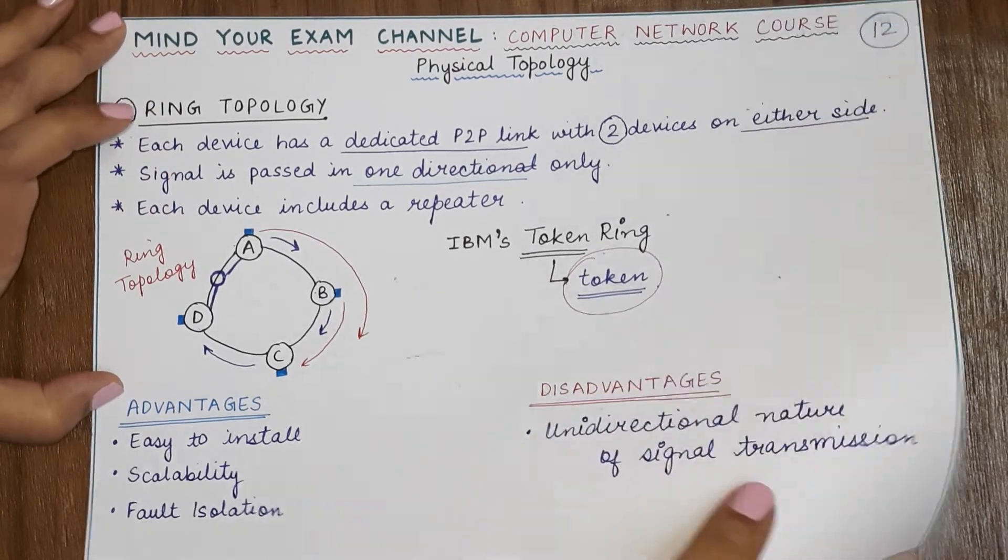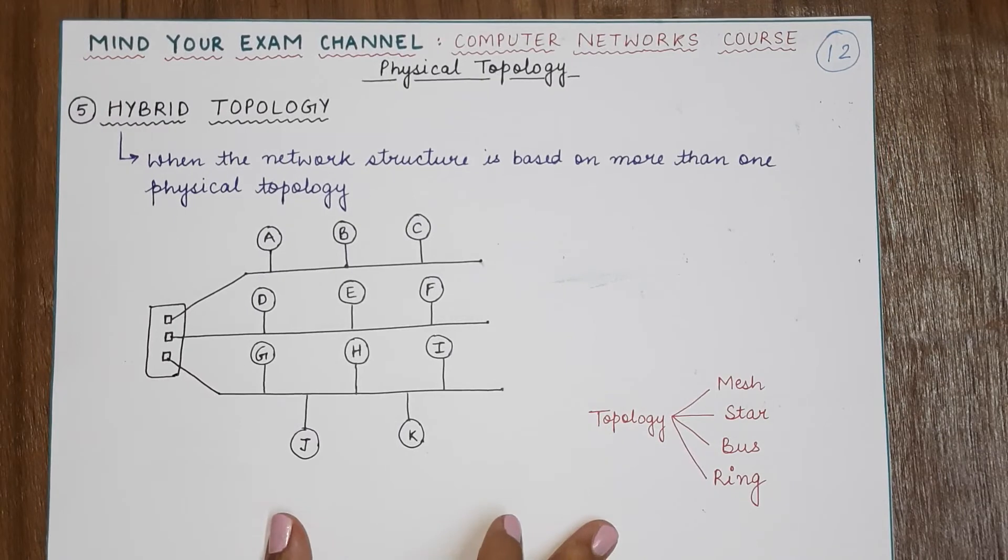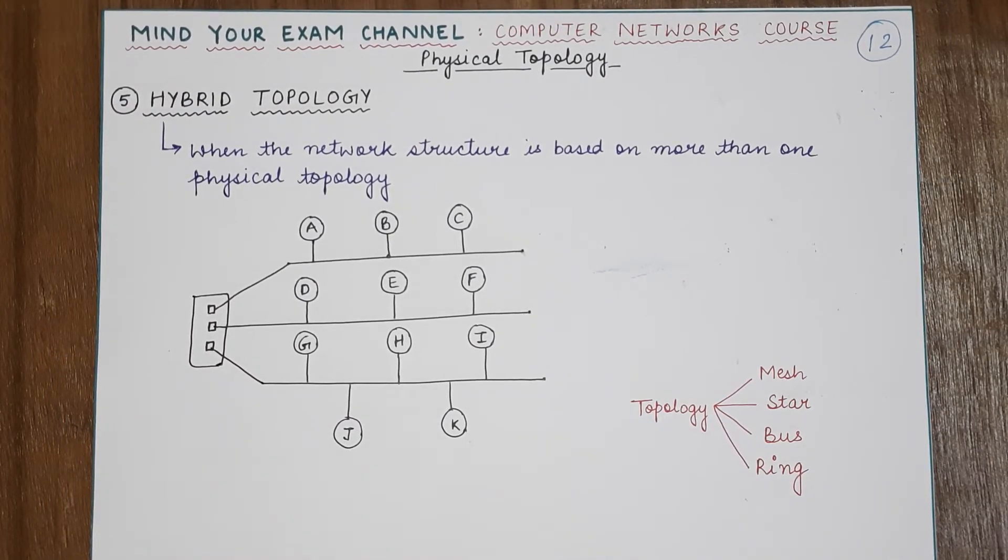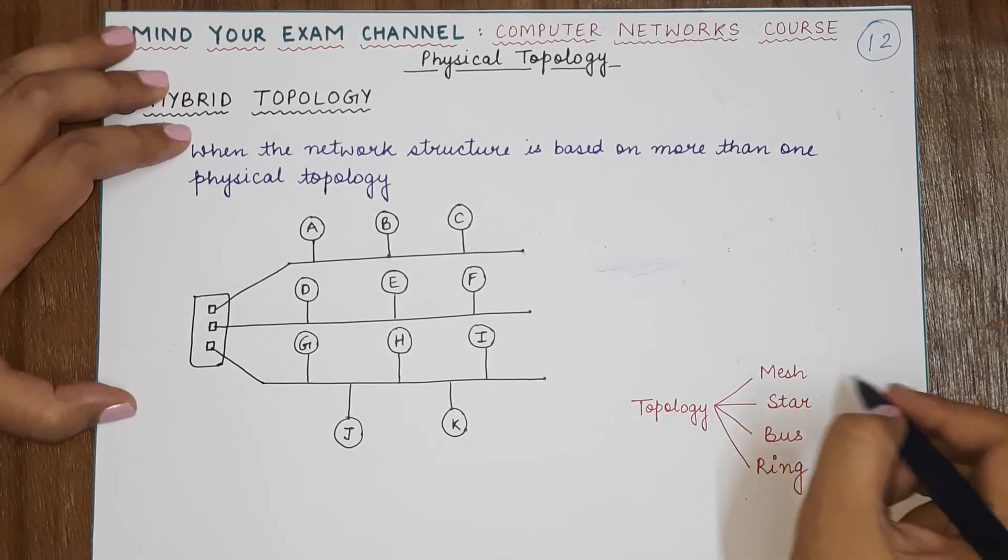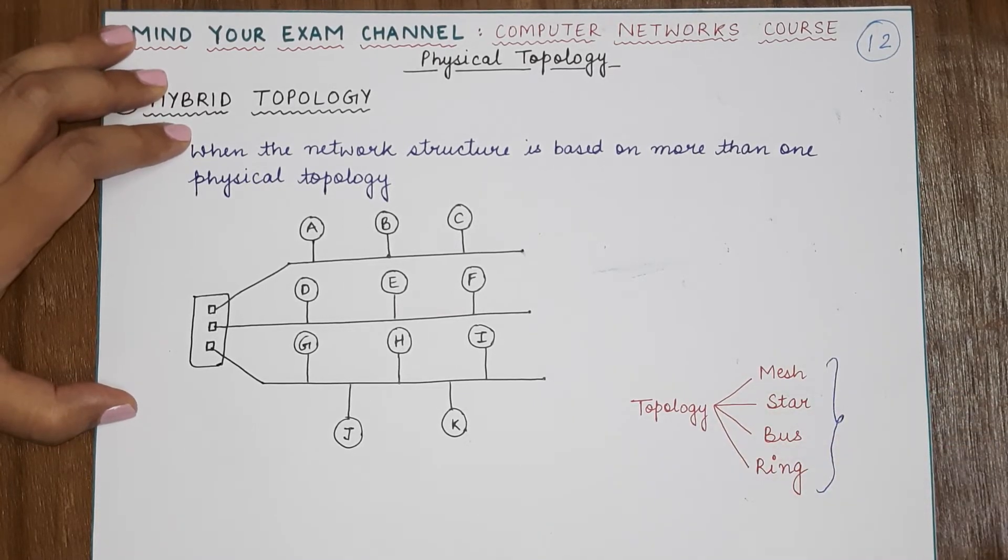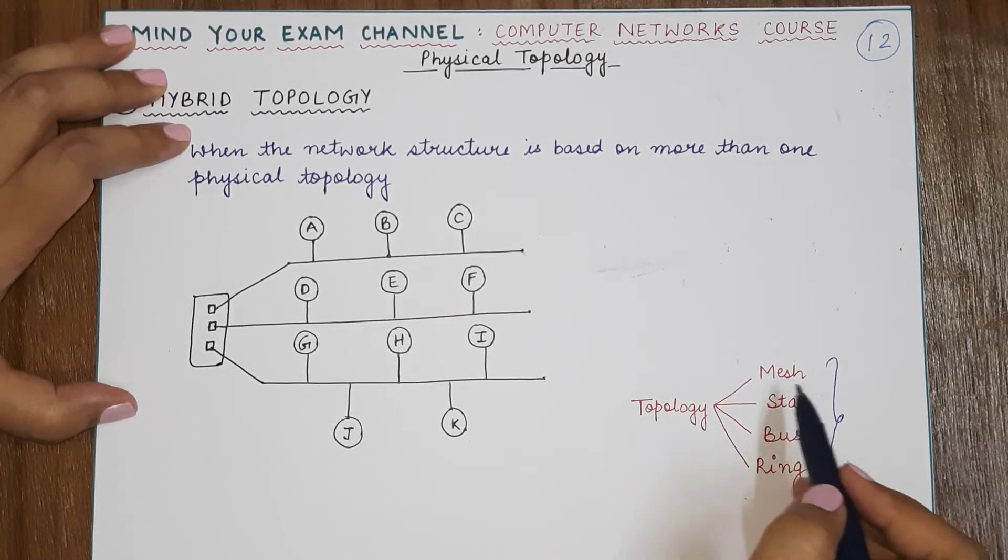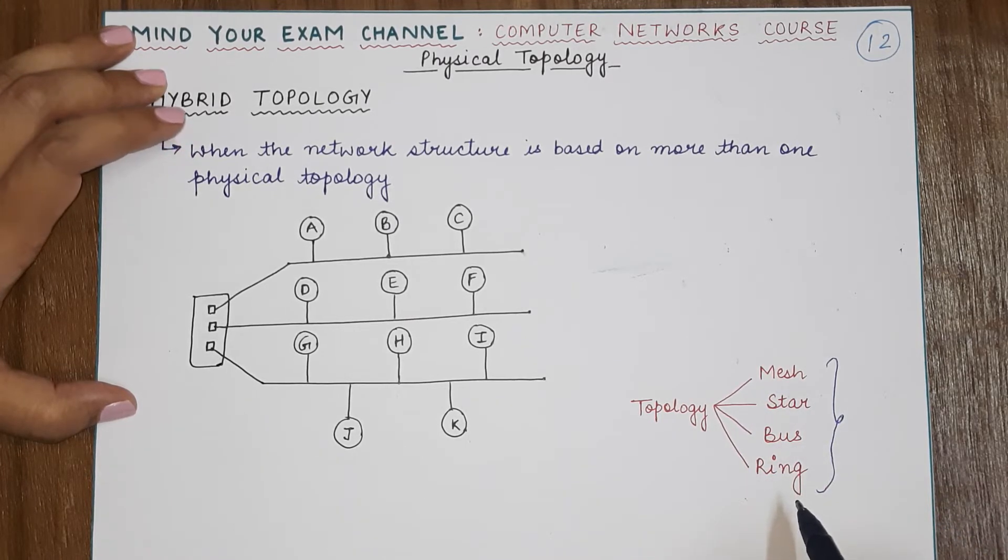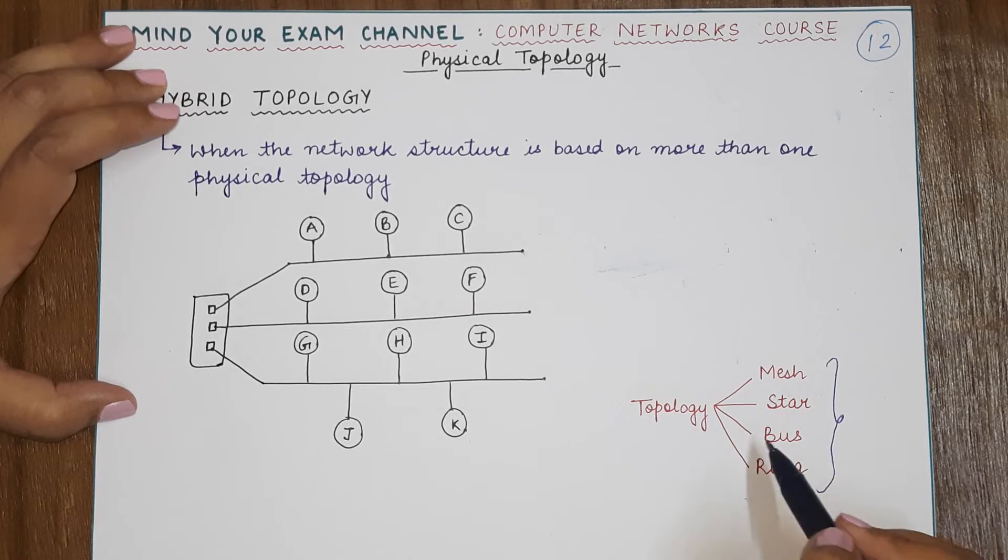Now coming to the last kind of topology, which is the hybrid topology. In case of hybrid topology, you can use any of these four topologies that we have discussed till now—the mesh, the star, the bus, and the ring topologies—and you can combine them to form a new kind of network structure.